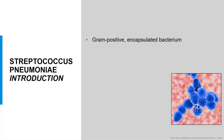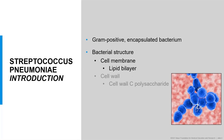Streptococcus pneumonia is a gram-positive encapsulated bacterium. Although generally thought of as a diplococci, this bacteria can also be found singly or in larger chains as shown in this picture. The structure includes an intercellular membrane composed of a lipid bilayer, and a cell wall which consists of cell wall C polysaccharide. This polysaccharide is invariant across the various serotypes and induces antibodies which are not protective in terms of an immune response against Streptococcus pneumonia.